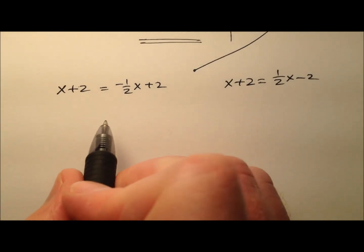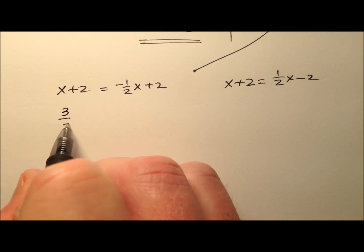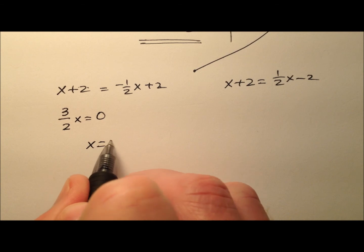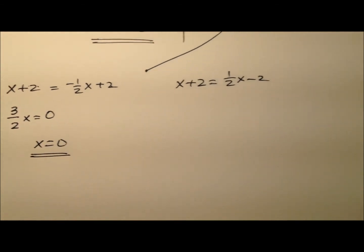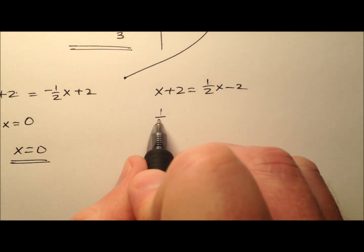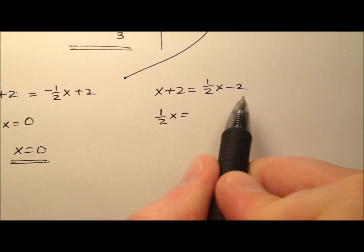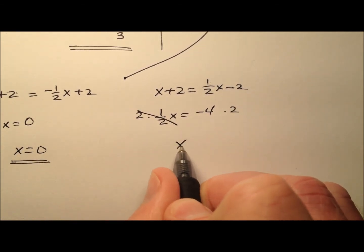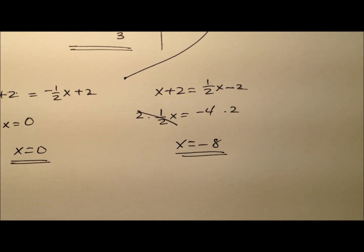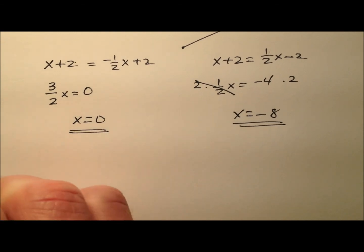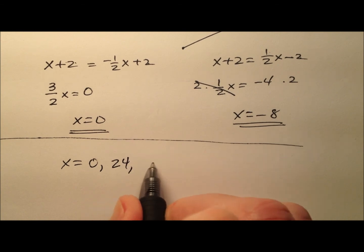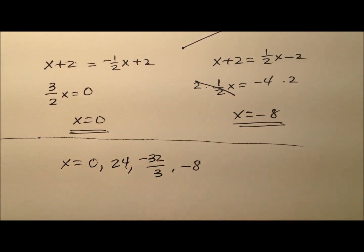Solving both of these: adding one-half x gives three-halves x equals 2 minus 2, which is 0, so x equals 0. For the last one, subtracting one-half x gives one-half x equals negative 2 minus 2, which is negative 4, and multiplying both sides by 2 gives x equals negative 8. Now I have four potential solutions: x equals 0, 24, negative 32 thirds, and negative 8.